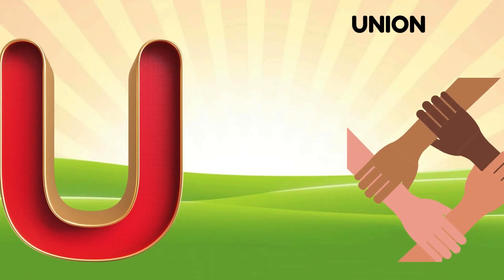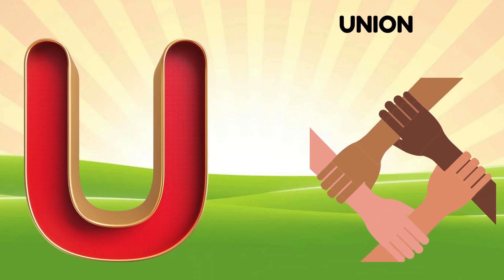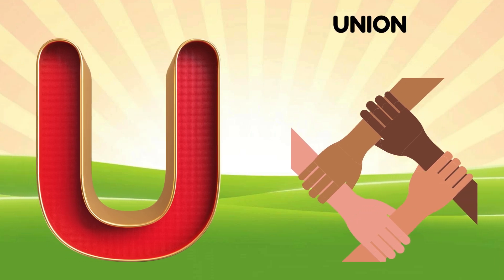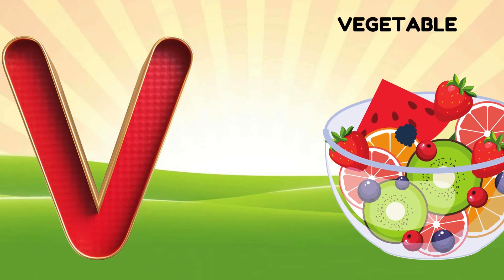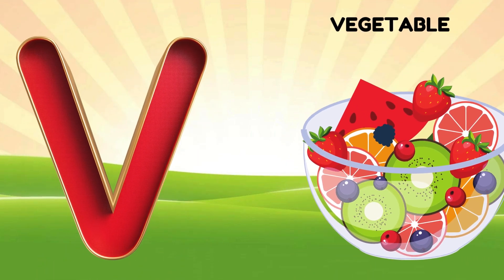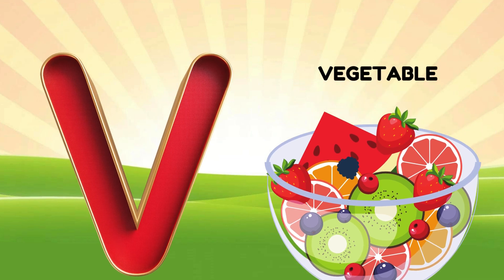U is for union, a-a-union. V is for vegetable, v-v-vegetable.